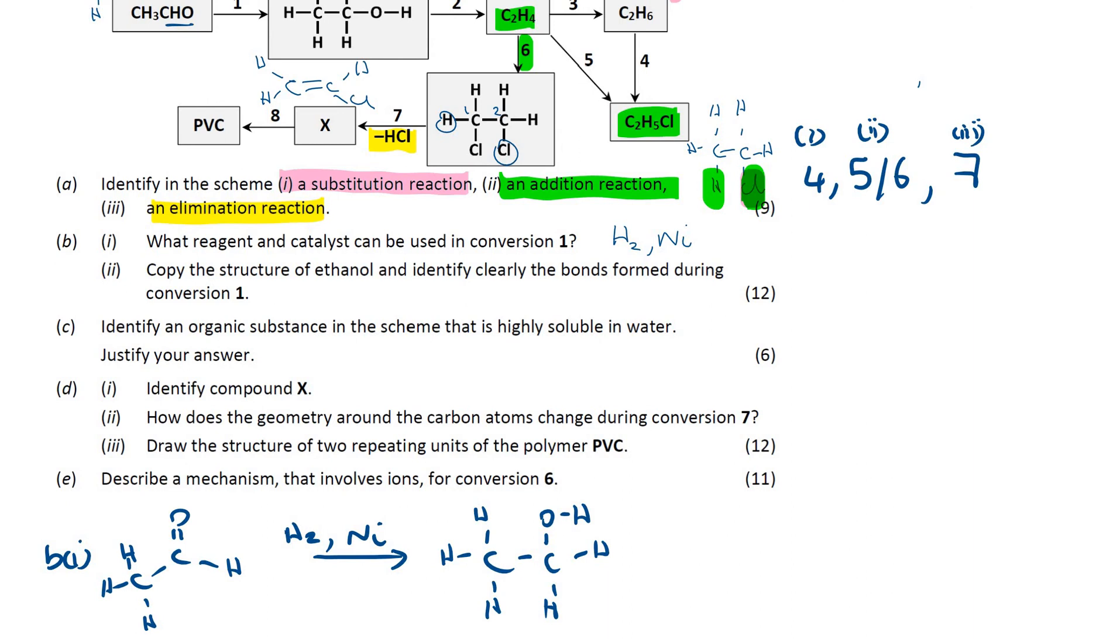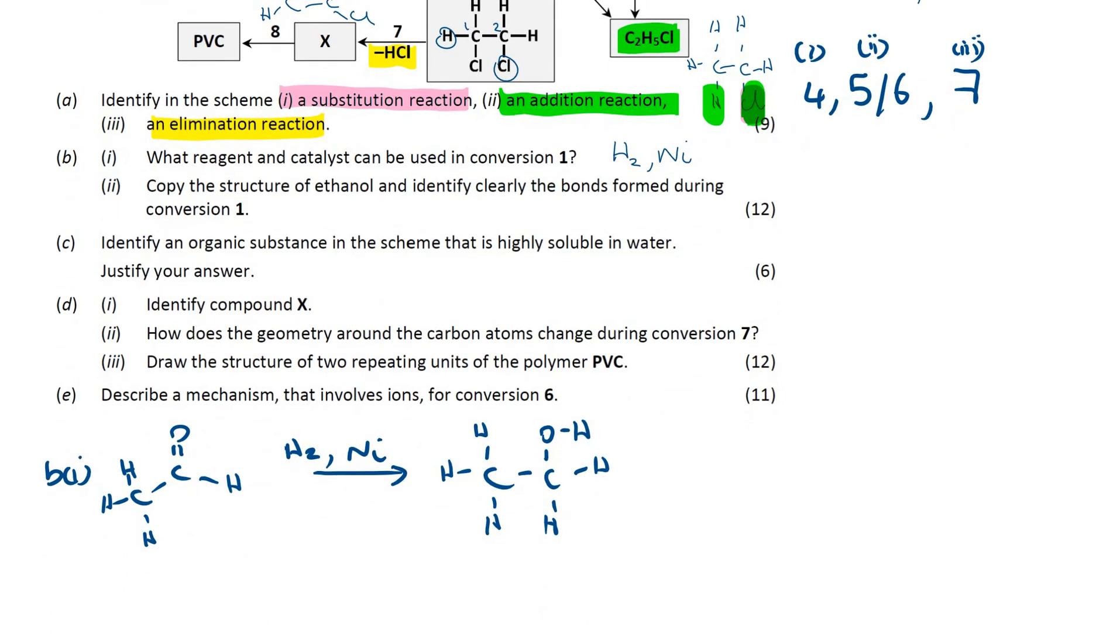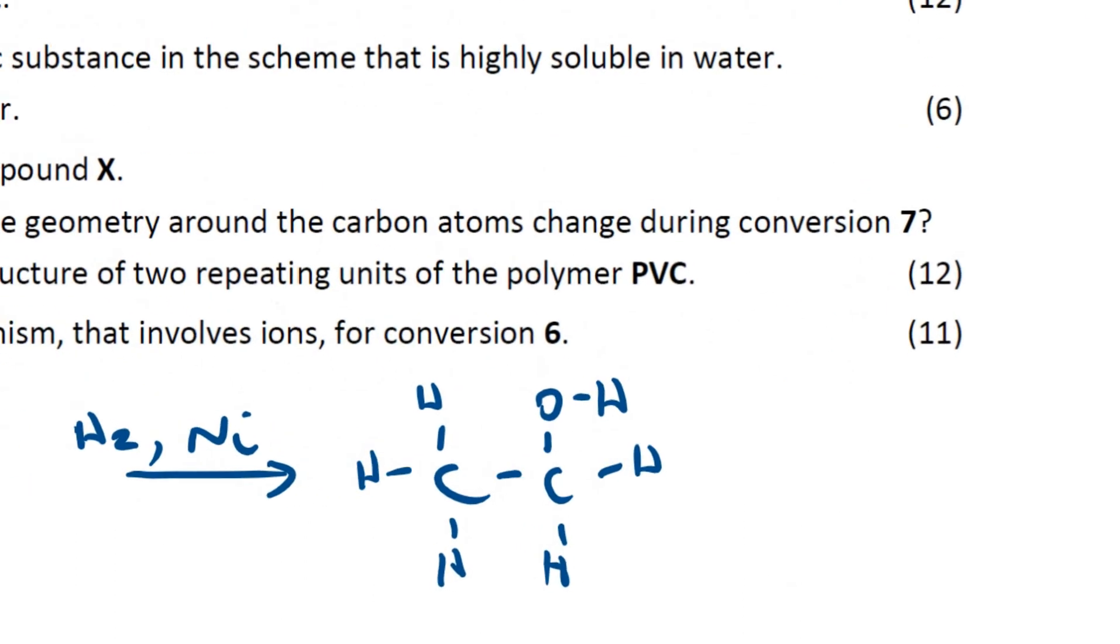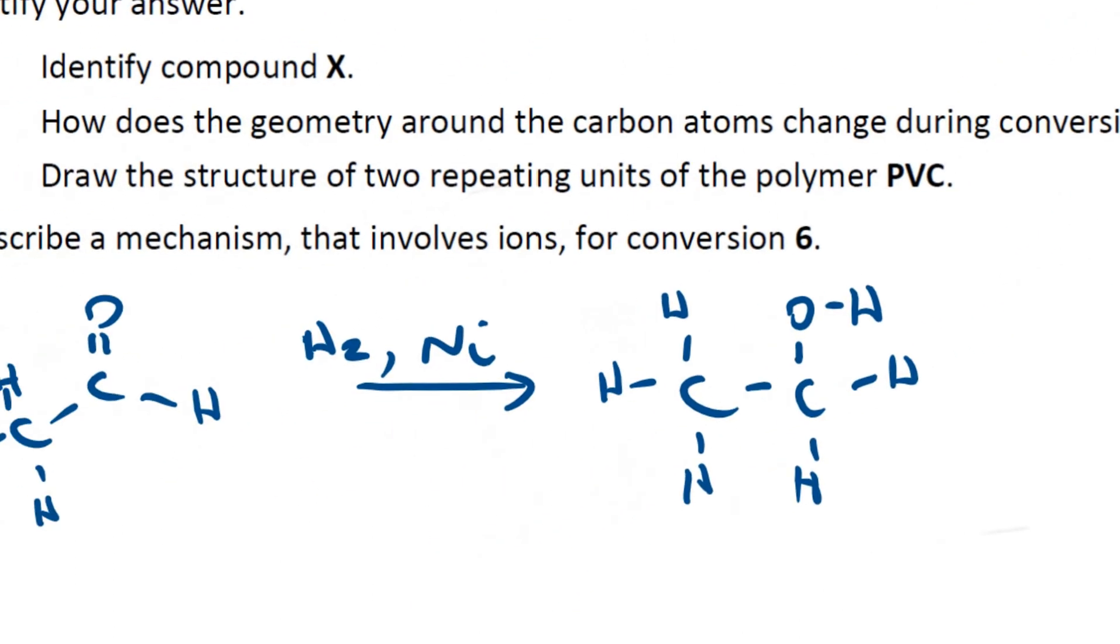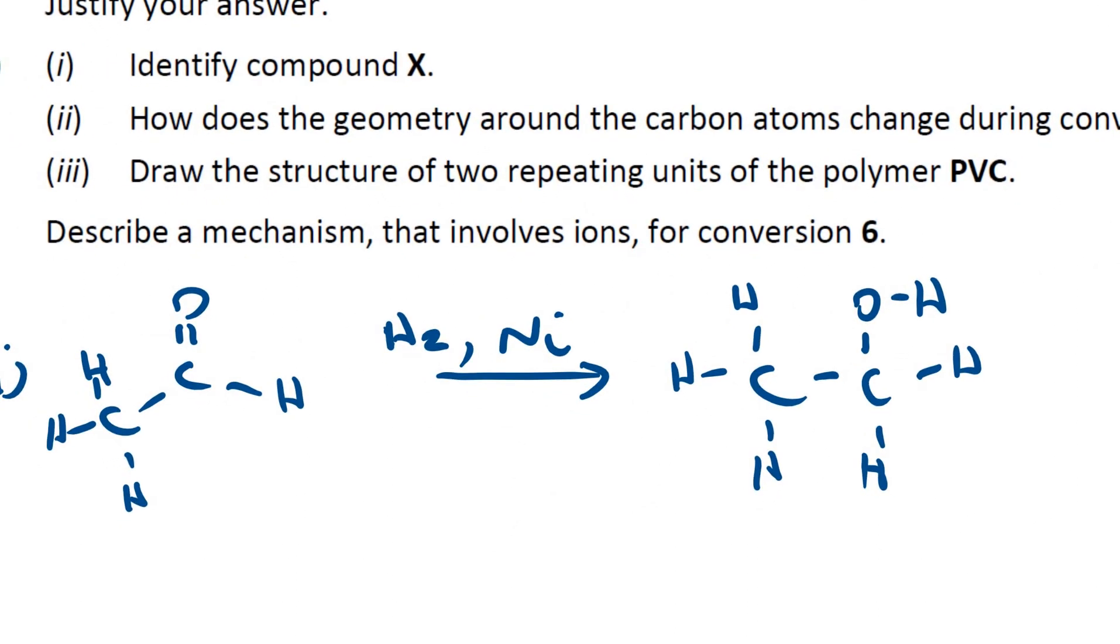Copy the structure of ethanol and identify clearly the bonds formed during conversion 1. Here I've got the ethanol, I've drawn it out, and identify the bonds formed. Well, if I have both here, you can see there that I've got a new carbon hydrogen bond, but I've also got a new oxygen hydrogen bond formed when you're making the alcohol. So, this carbon here has gone from a planar arrangement with 3 atoms attached, but a double bond present, to 4 atoms attached, and all of them being single bonds.